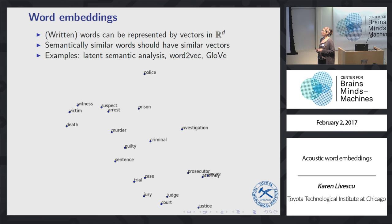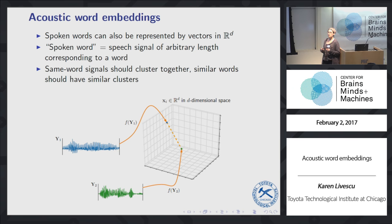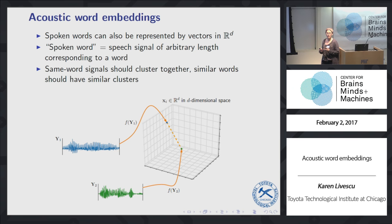We're interested in doing something similar for spoken words, but the motivation is a little different. Acoustic word embeddings means taking a spoken word — a signal, a segment of speech corresponding to a word — and embedding it with some function into a d-dimensional vector space. We're taking this arbitrary-duration signal and mapping it into a fixed-dimensional space, where ideally all signals corresponding to the same word have a tight cluster, and similar-sounding words have clusters that are close together.